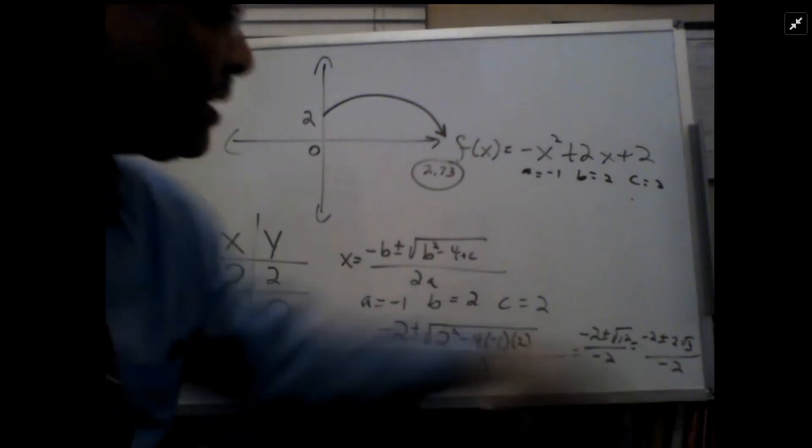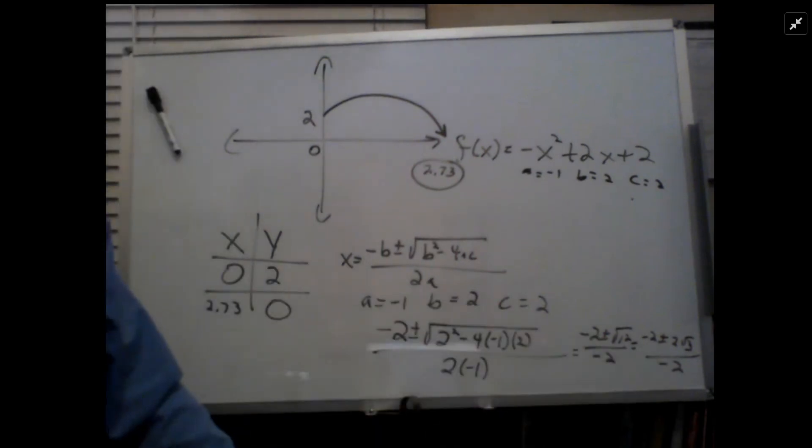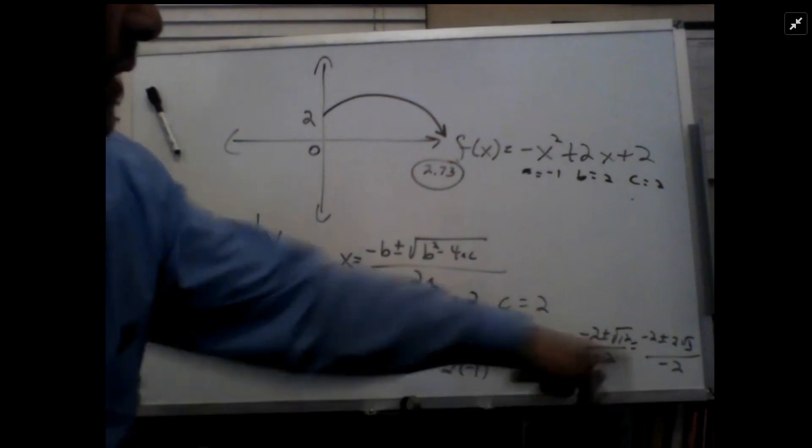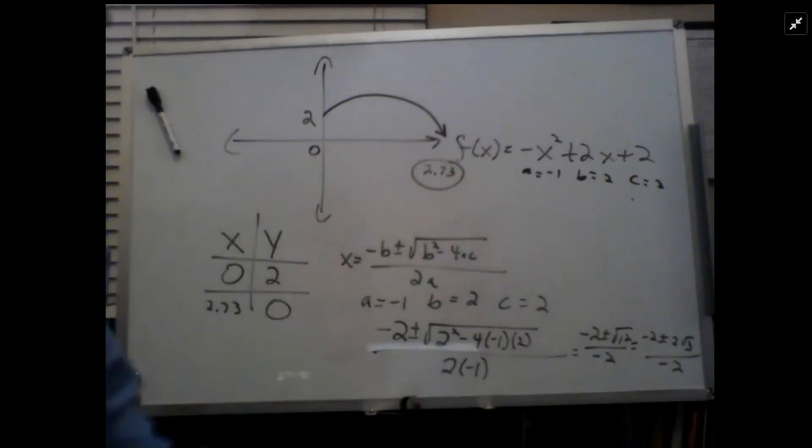If we did the plus, I think it would have been a negative number, and that would not have worked because there's no such thing as negative distance in this case.